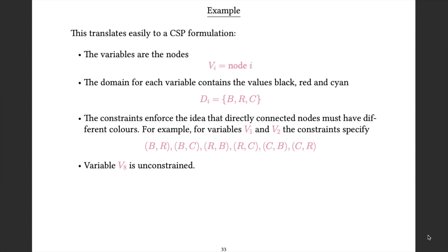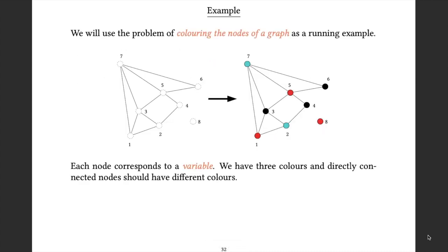In more formal notation, the variables of the CSP are the nodes, with the ith variable representing the ith node. The domain for each variable contains B, R and C corresponding to the three possible colours. The constraints enforce that any pair of connected variables must have a different pair of colours. For example, we couldn't assign C to V1 and C to V2 because that doesn't appear in the list of allowable pairs. V8 would be entirely unconstrained — it can have any value, because it's not connected to anything else.